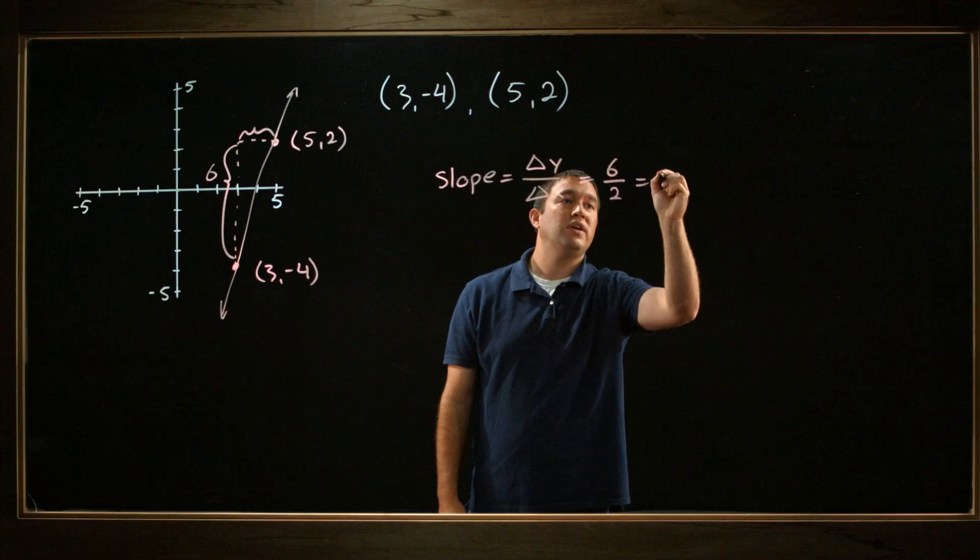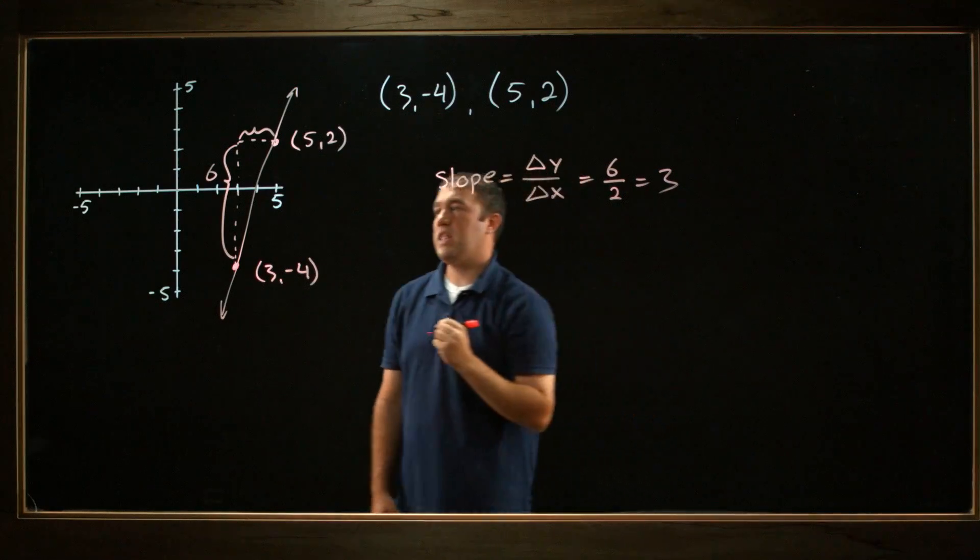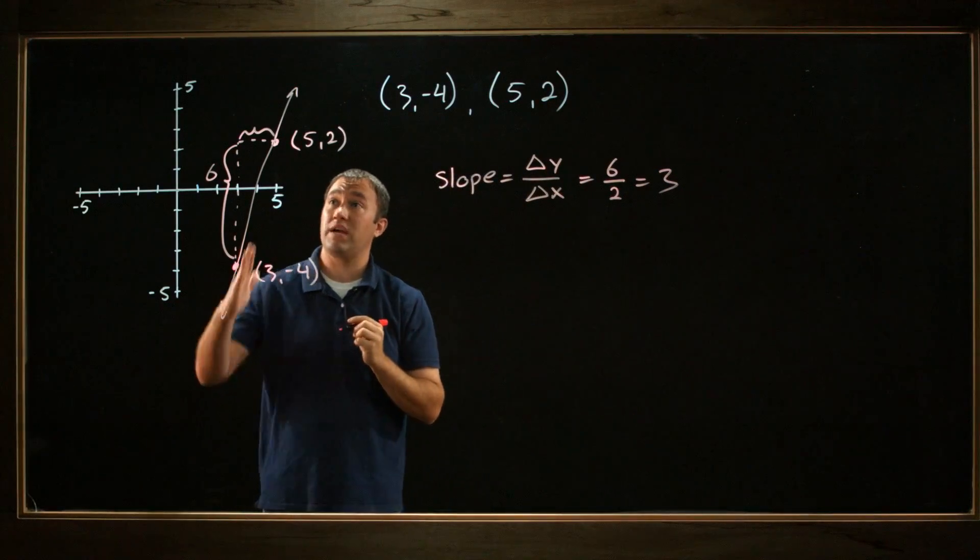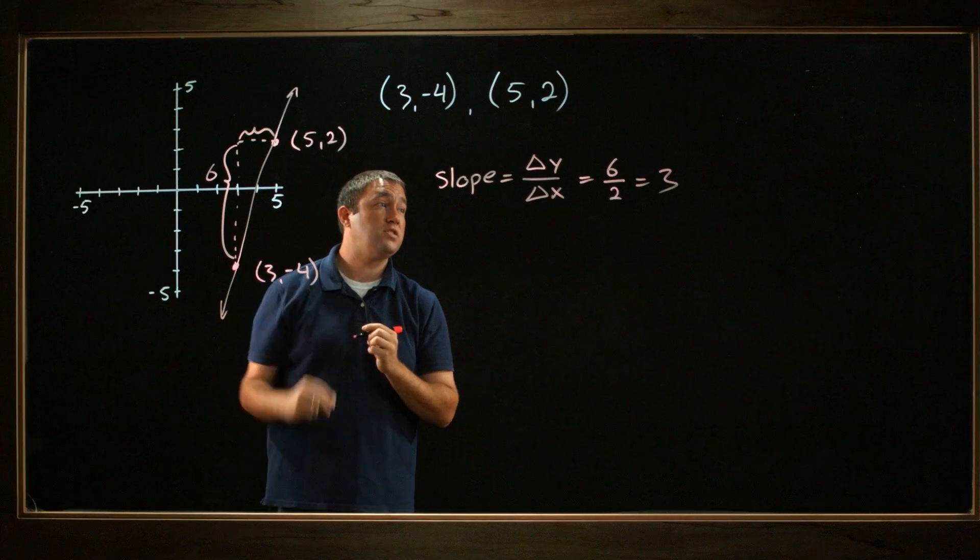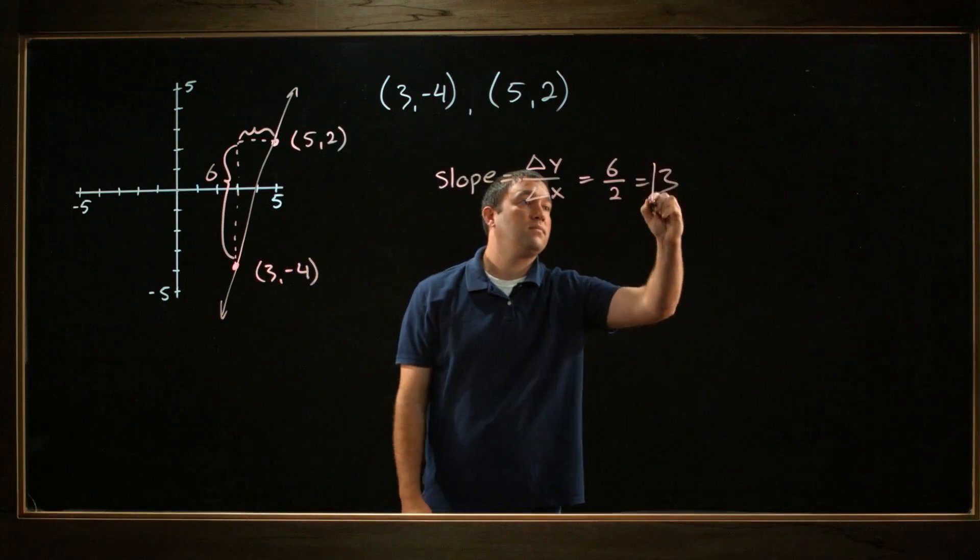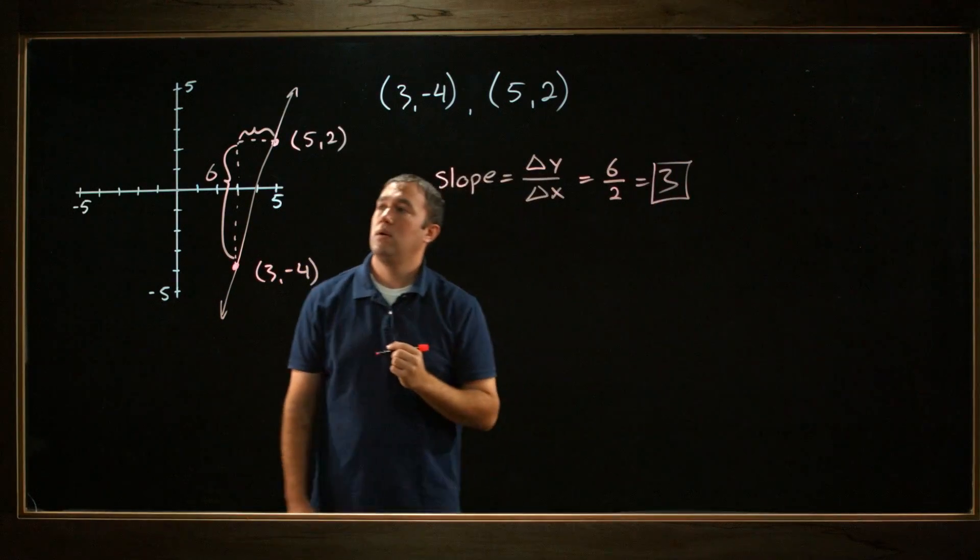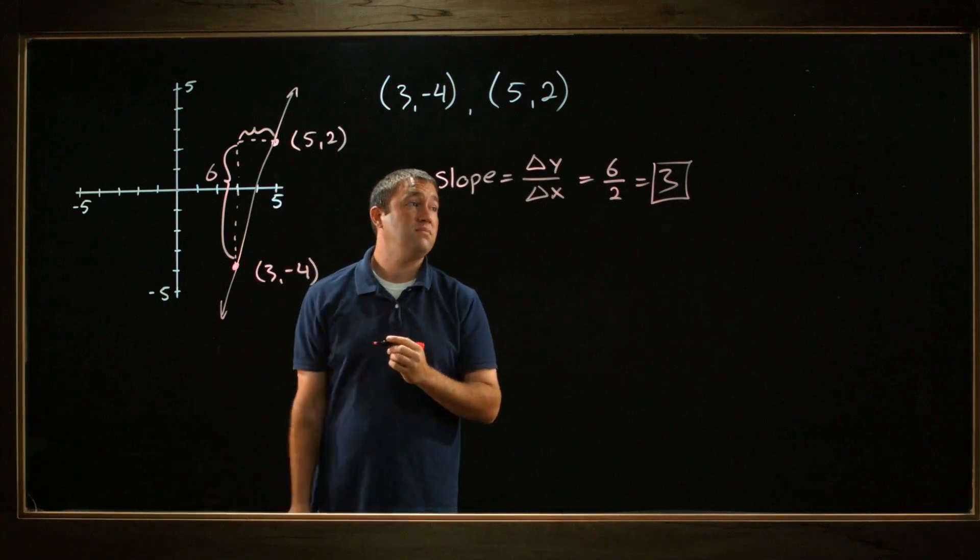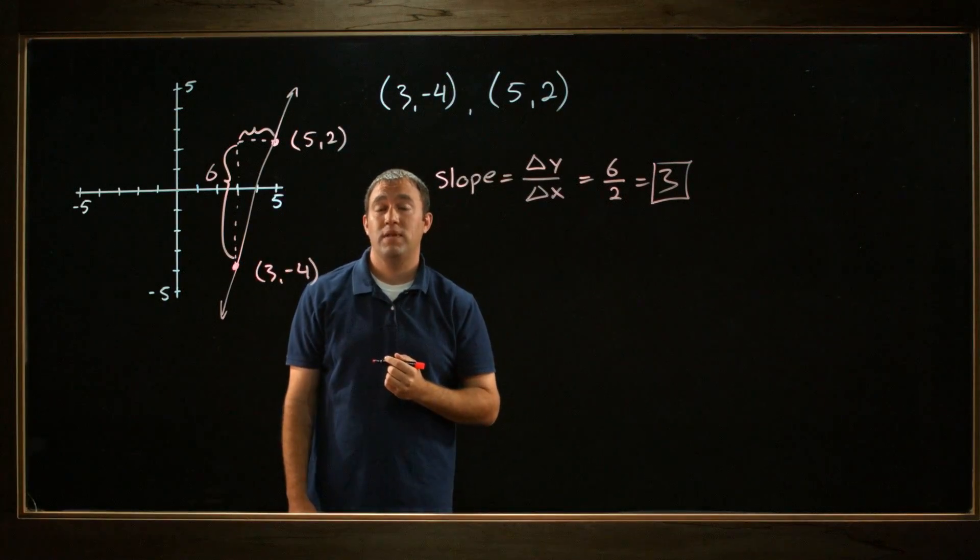Well, 6 over 2 is equal to 3. And I look at that and I think to myself, well, this definitely looks like a positive steep slope. A slope of 3 makes a lot of sense. So in this case, the slope of this line is 3. Well, that's great. Thanks for watching.